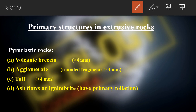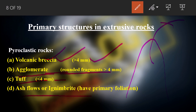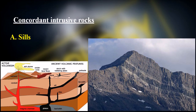Next we have pyroclastic structures, which involve everything that comes out of a volcano. Large angular fragments are called volcanic breccia; rounded fragments greater than four millimeters are agglomerates; tuff is less than four millimeters; and ash flow, also called ignimbrite, has a primary foliation and is very fine-grained.